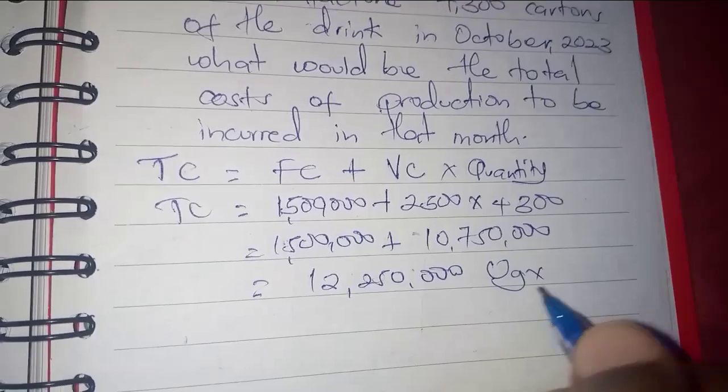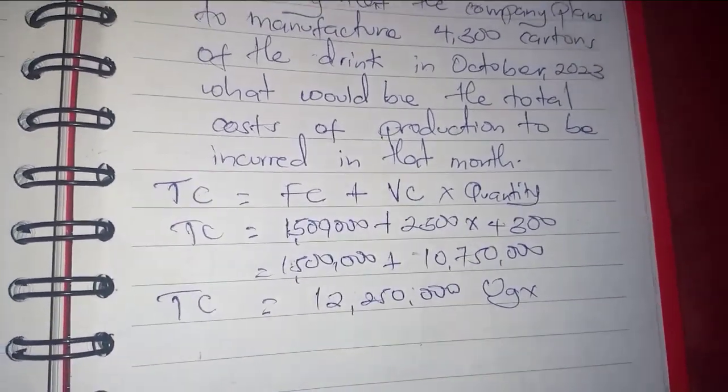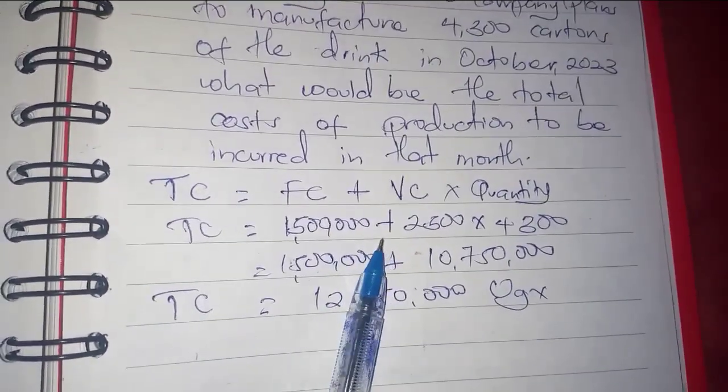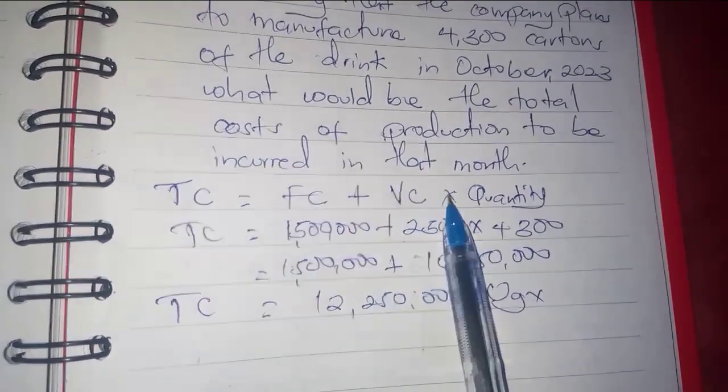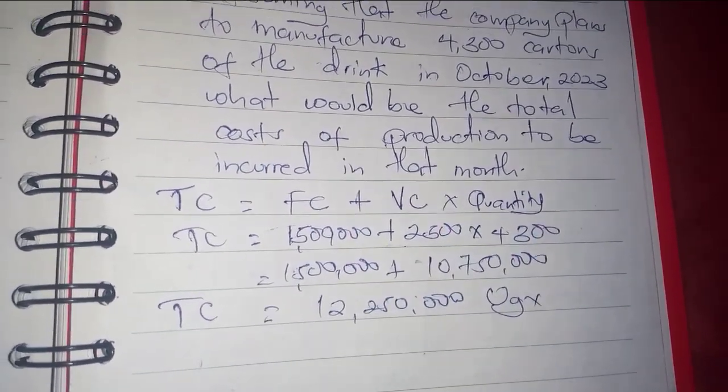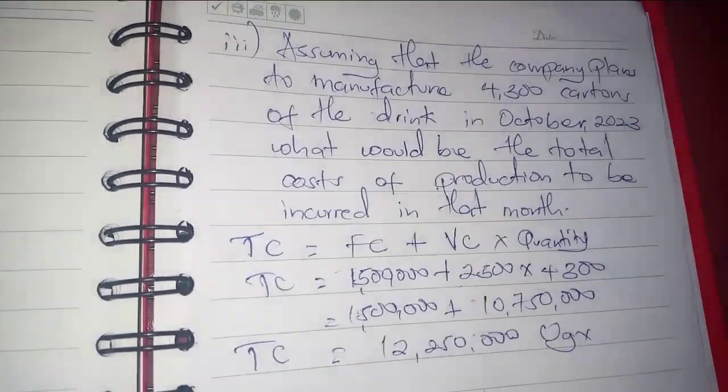So that is the total cost, and that is the formula for determining total cost: fixed cost plus variable cost times quantity. Thanks for watching.